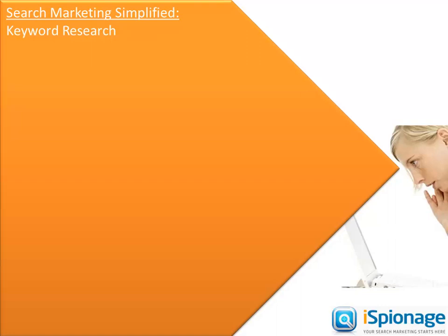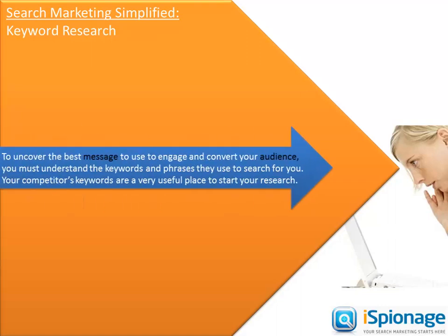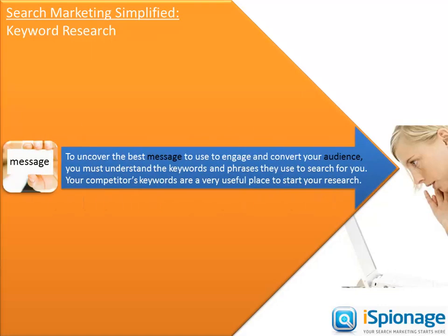In our last tutorial we touched on the fact that the point of search marketing is to deliver your message or offer as efficiently as possible to your target audience. iSpionage can help you achieve this by ensuring that your message is connected to or composed of a broad spectrum of valuable keywords being used by your audience.